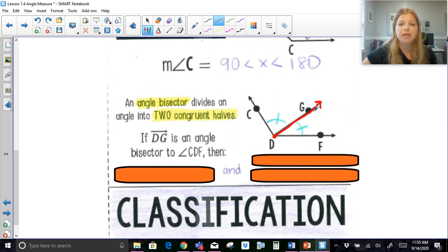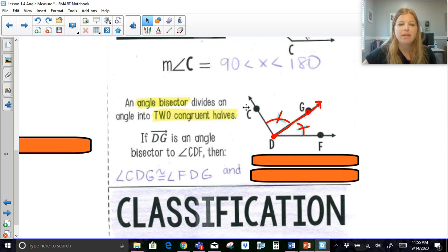DG. If DG is an angle bisector to angle CDF, then that means that this big angle is bisected, and that would mean that angle CDG is congruent to angle FDG. When you have an angle bisector, it simply means you're taking this angle and you're cutting it into two halves. So then this angle is congruent to this angle here. And you can see I just marked them off.